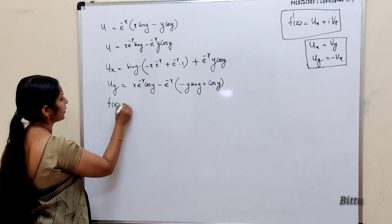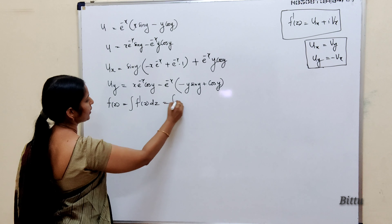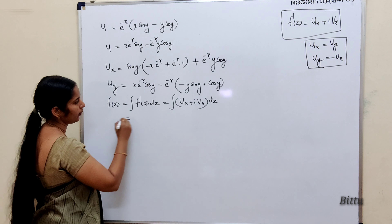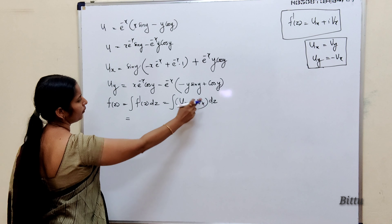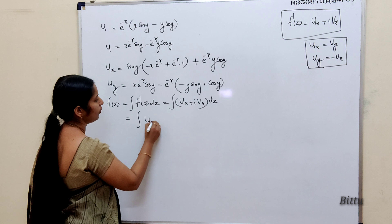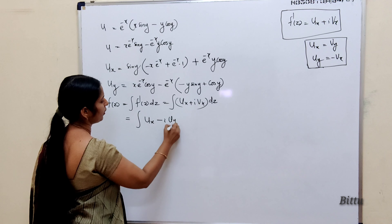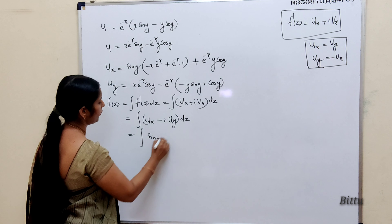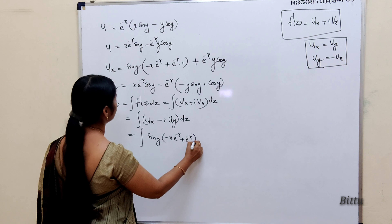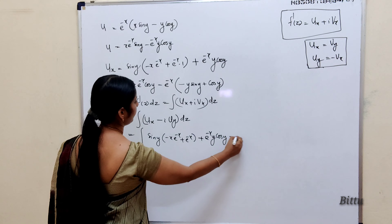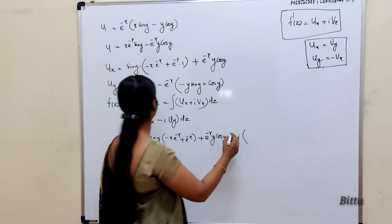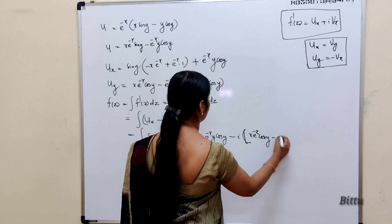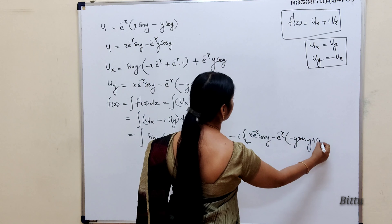For ∂u/∂y: in the first term x·e^(−x) is a constant; derivative of sin(y) is cos(y). For the second term, apply product rule to y·cos(y): first × derivative of second + second × derivative of first = y·(−sin(y)) + cos(y). Since u is given, we replace v_x using v_x = −u_y. Substituting: u_x = sin(y)·(−x·e^(−x) + e^(−x)) + e^(−x)·y·cos(y), and u_y = x·e^(−x)·cos(y) − e^(−x)·(−y·sin(y) + cos(y)).